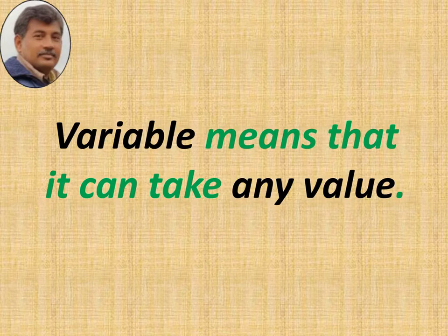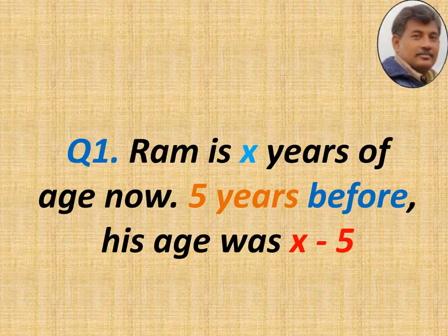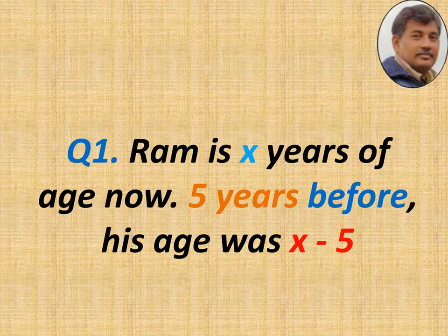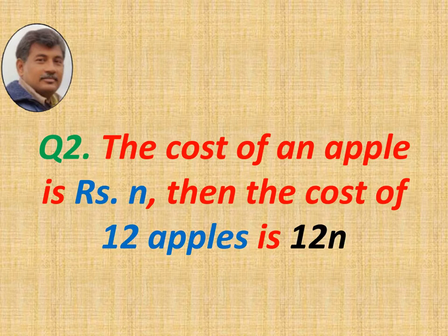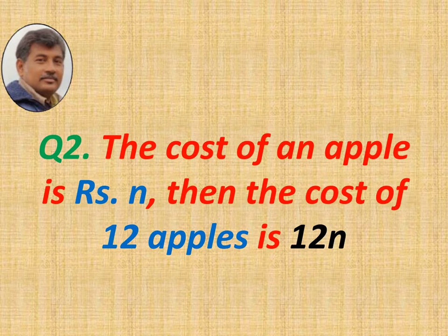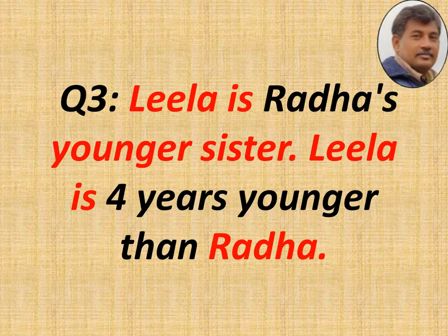Let us see some examples. Rom is x years of age now. Five years before, his age was x minus 5. If we do not know Rom's age, we use x like this. The cost of one apple is rupees n, so the cost of 12 apples is 12n — we multiply to get 12n.